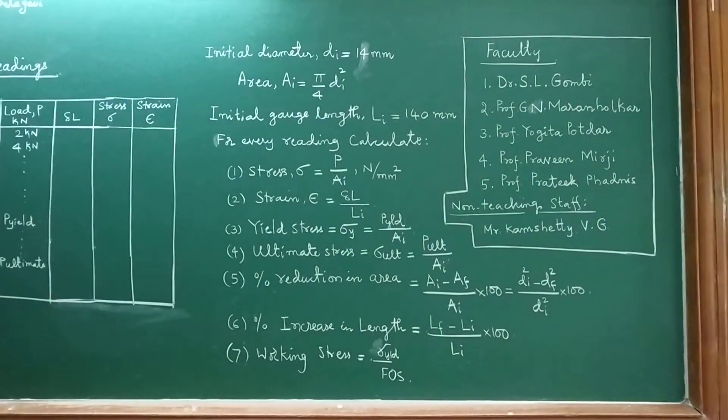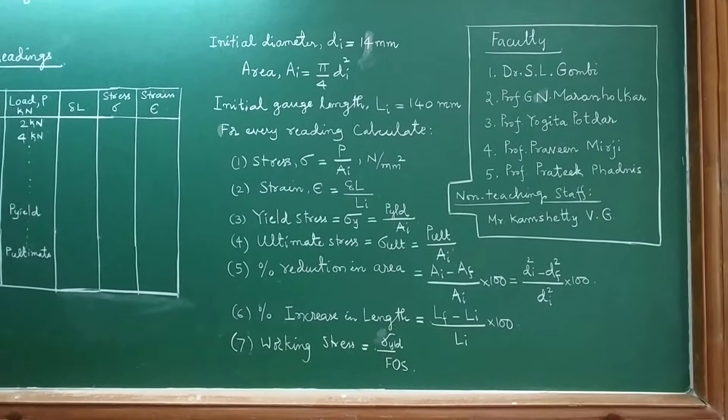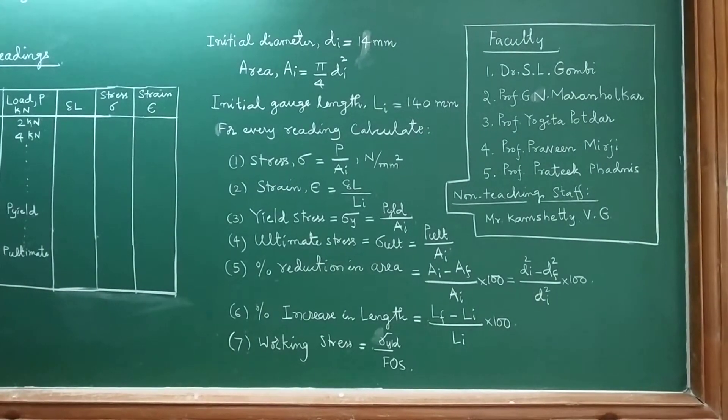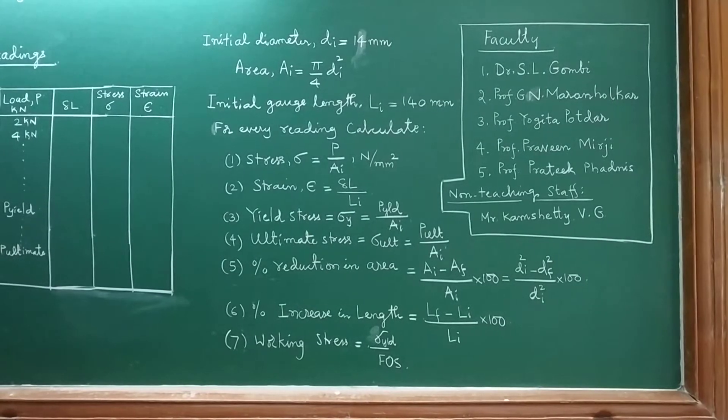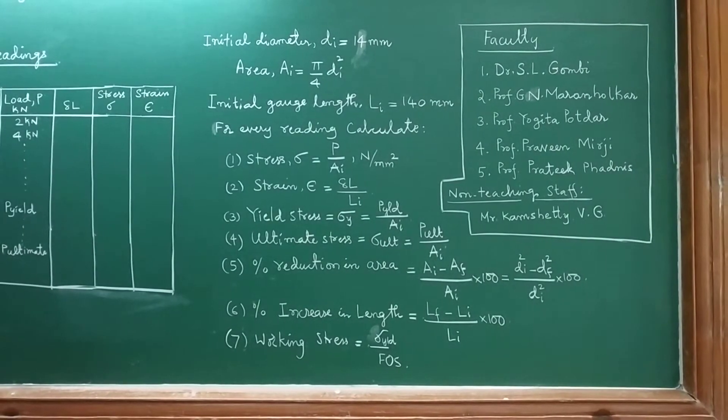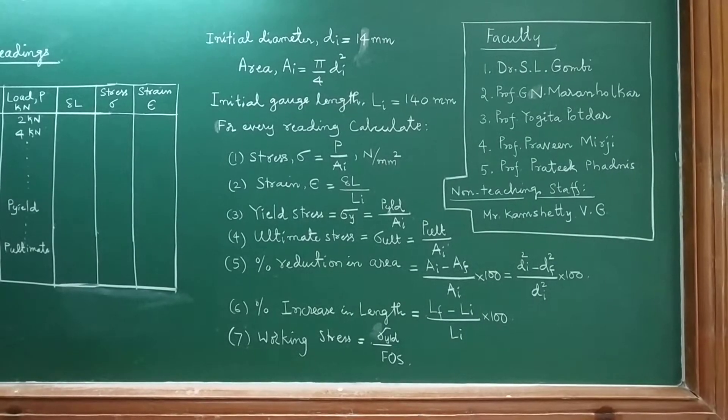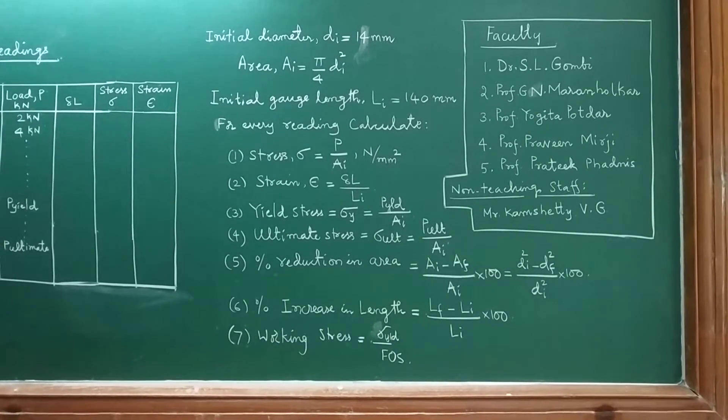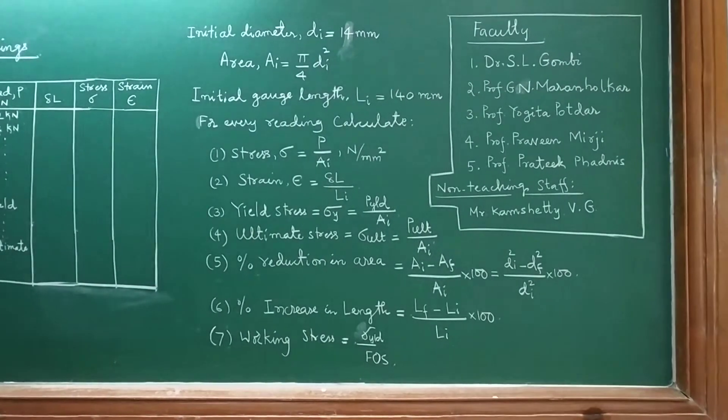For every reading, calculate stress, which is the ratio of the current load divided by the initial area—this is engineering stress. The strain is calculated as current change in length upon the original initial length. Then you have to locate the yield point, that is P yield upon the initial area, so you will get the yield stress.